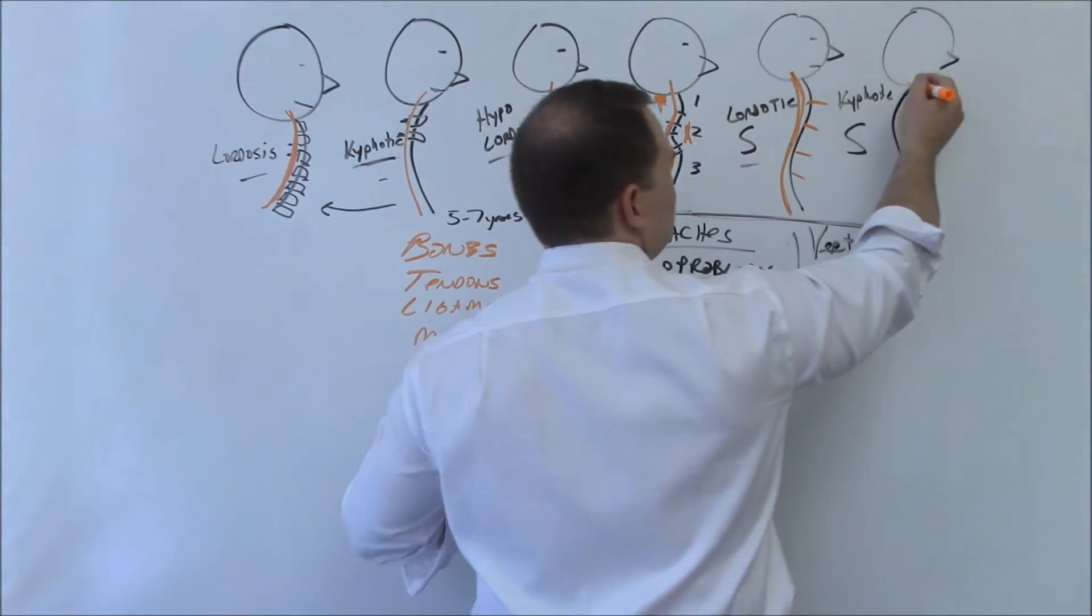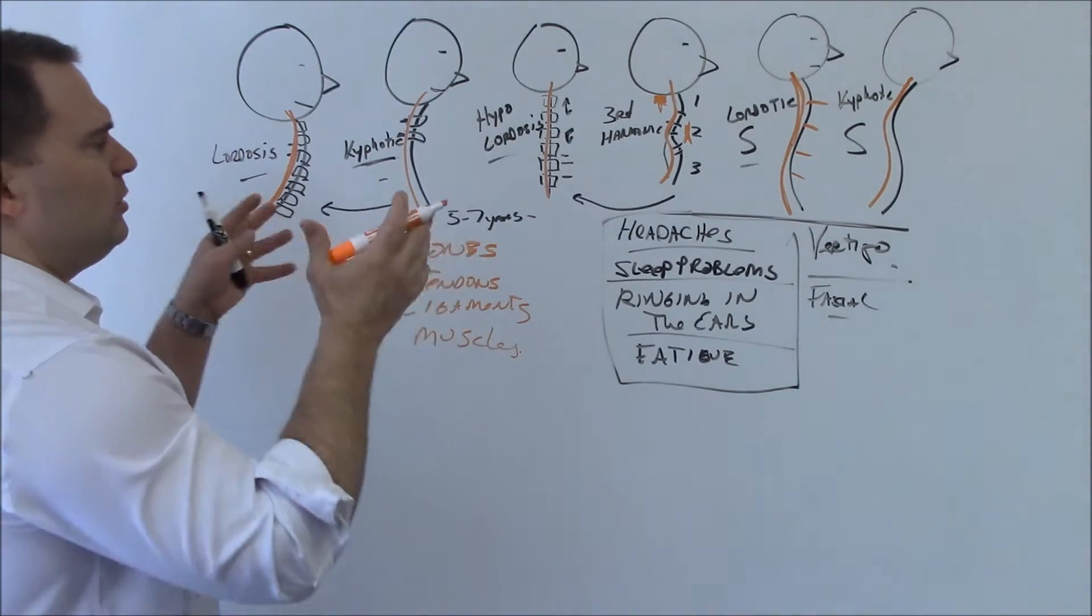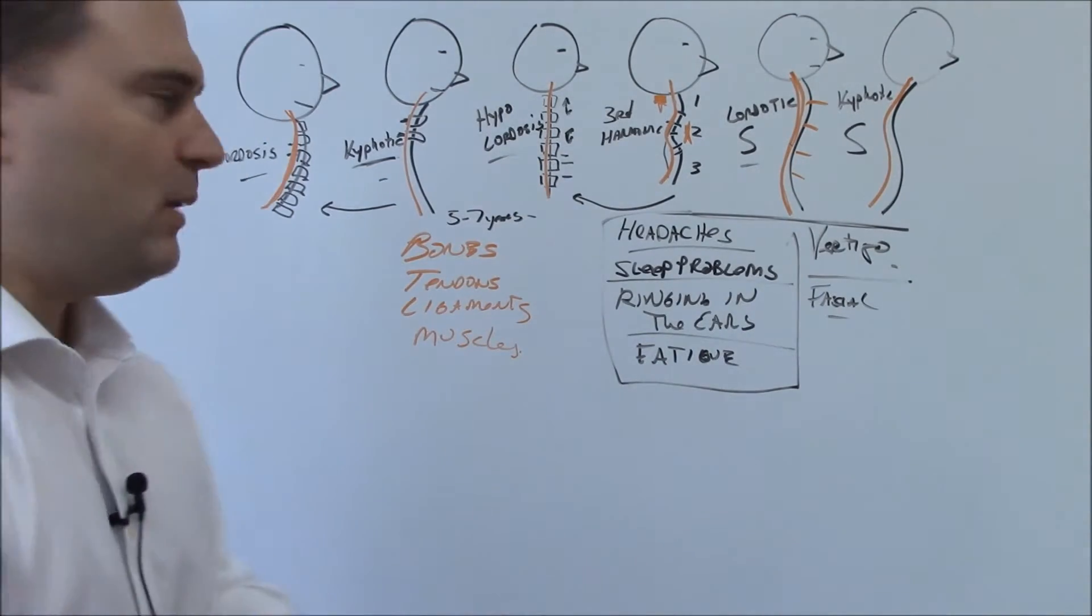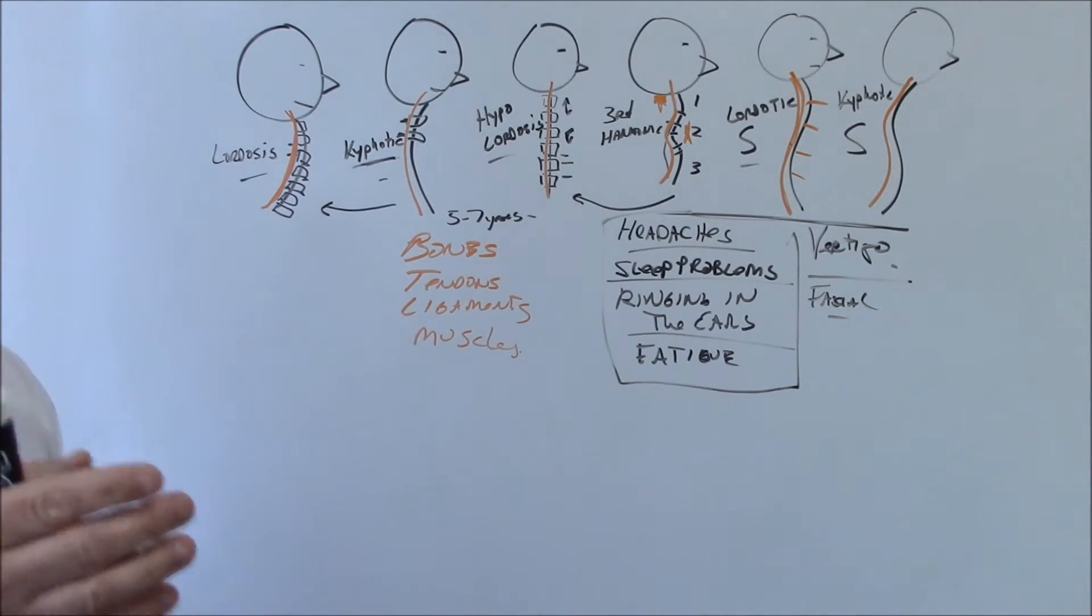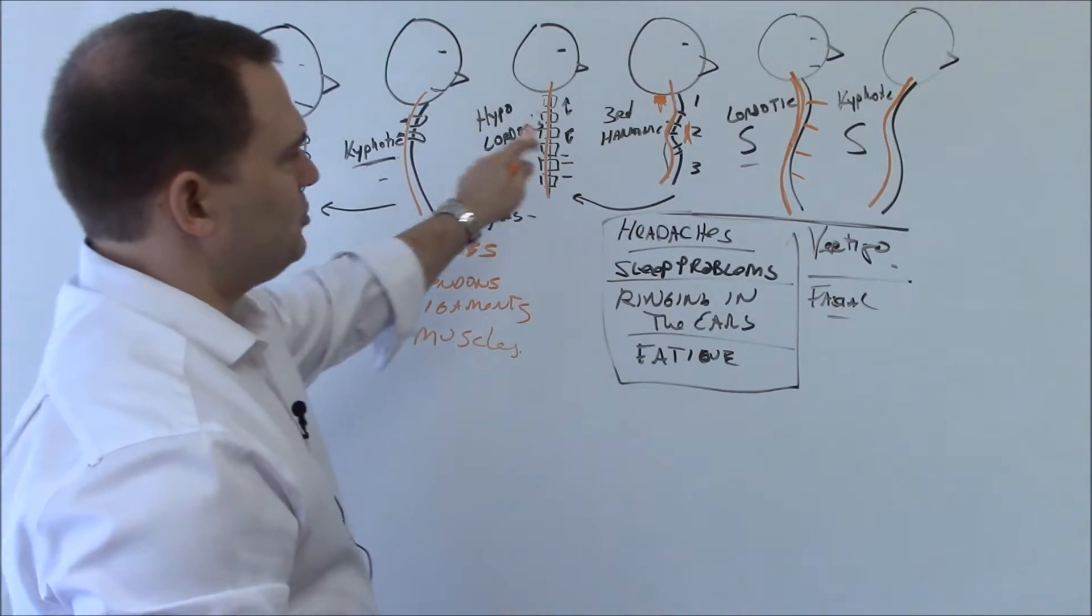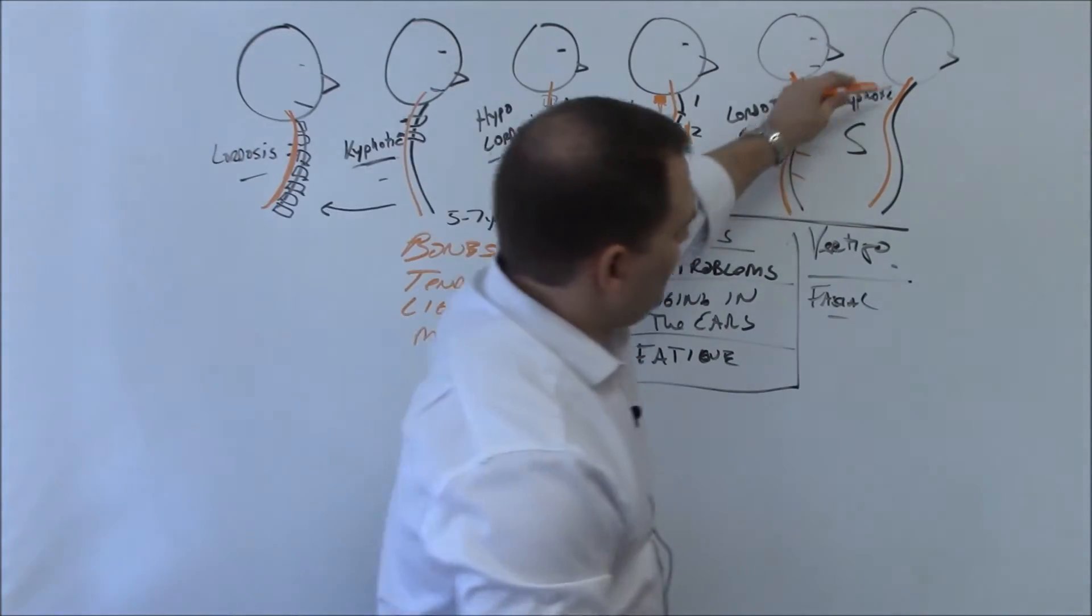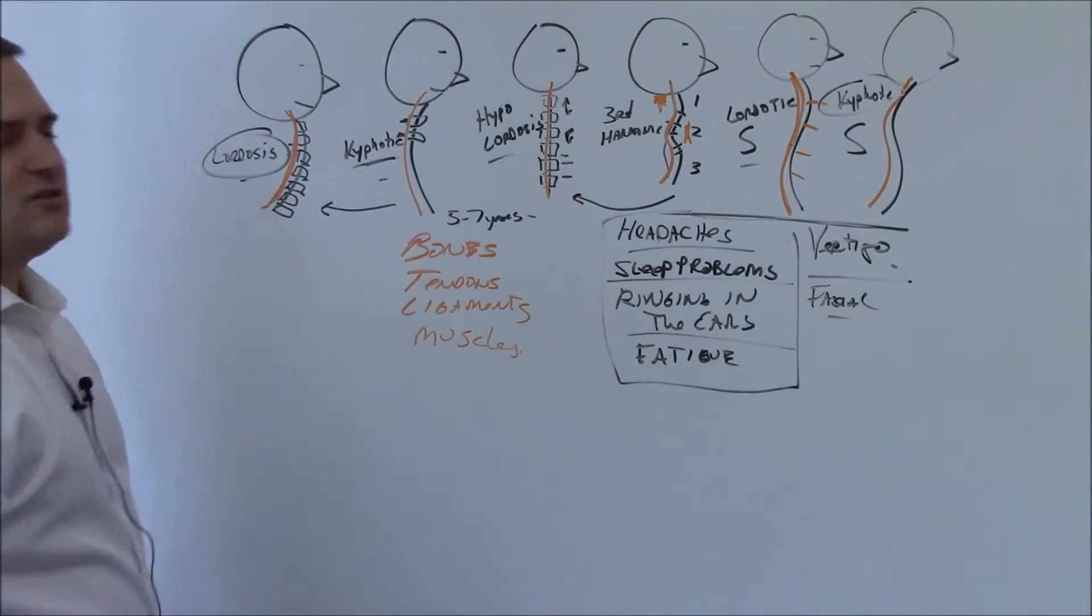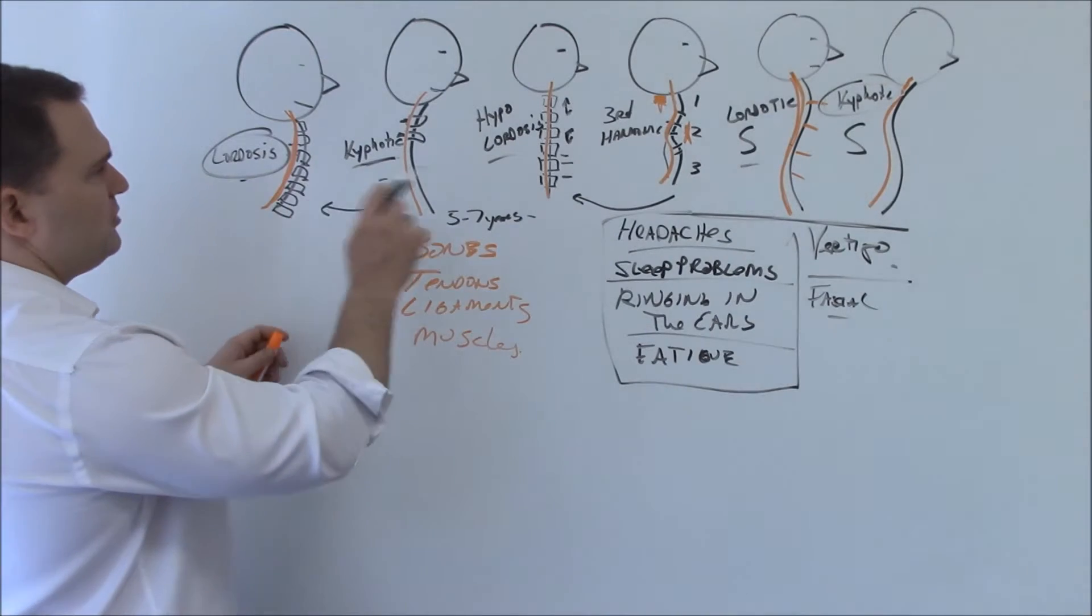We have a nervous system that has to be traveling down through that. There's all these different permutations of the cervical spine. We've got to start with knowledge first. We first have to know which one you are, and then after we know what you have, we can start to develop a treatment plan. You can't treat this the same way as you treat this. The physics is totally different, so we have to address things very specifically.